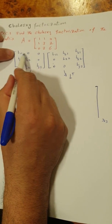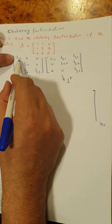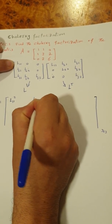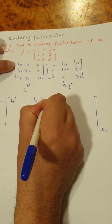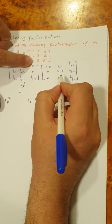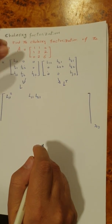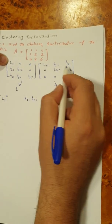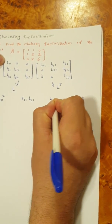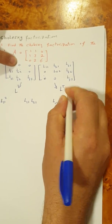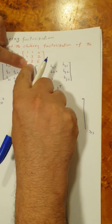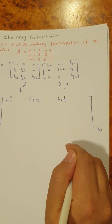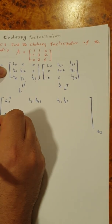To find the second element, we multiply the first row by the second column: L11 multiplied by L21, plus zero terms, giving L11 times L21. For the third element in the first row, multiplying the first row by the third column gives L11 multiplied by L31, with all other terms being zero, so the result is L11 times L31.